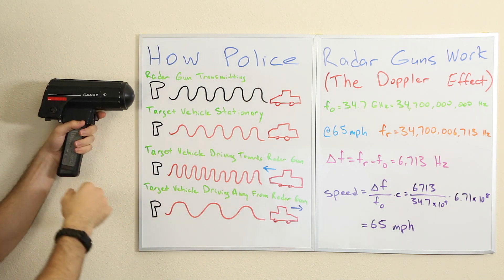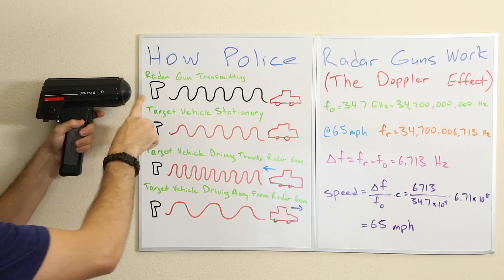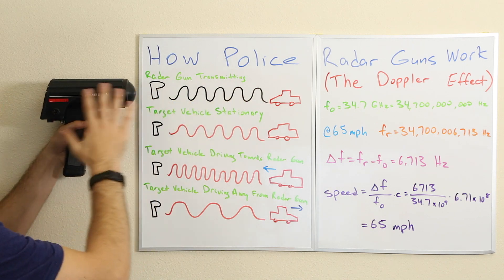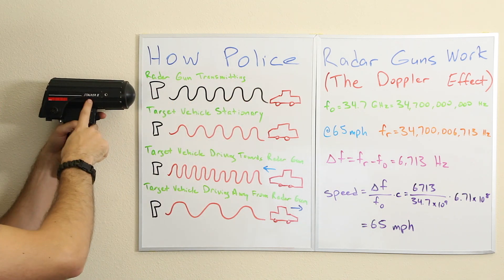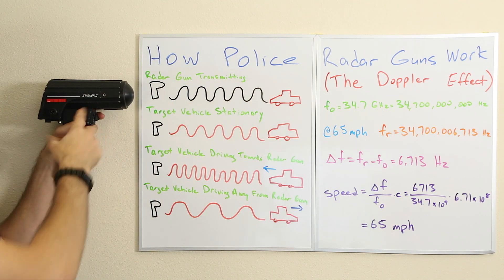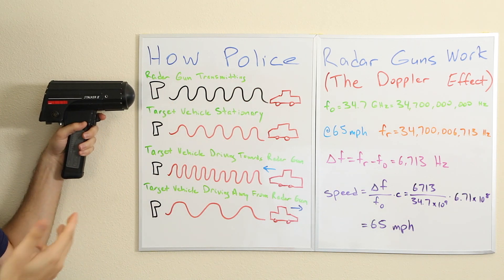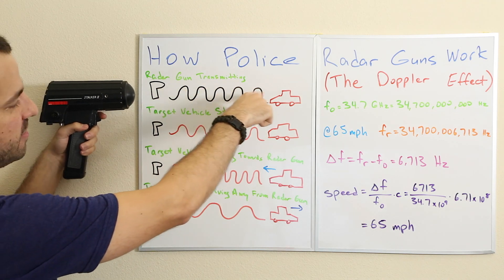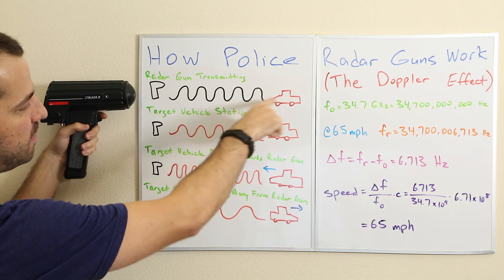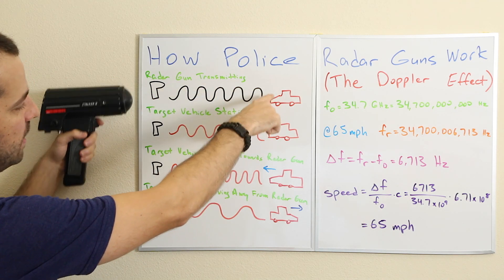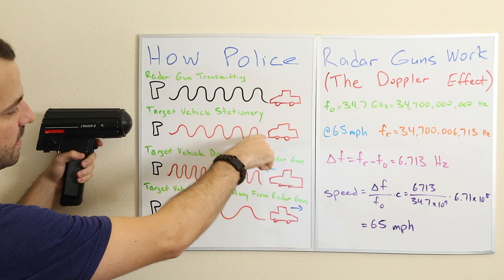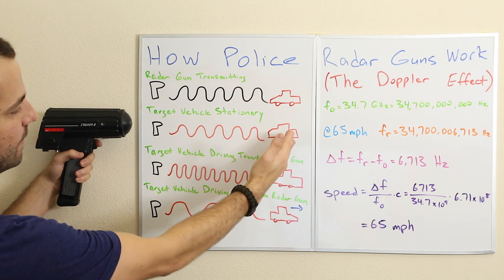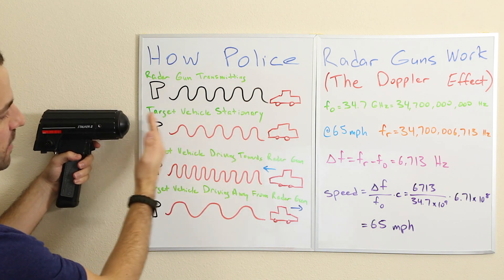The radar gun is going to be transmitting a signal. In this case, this is a Stalker gun, so it transmits at 34.7 GHz. That's going to be the frequency of the signal that's being transmitted. That signal is then going to hit a target vehicle and reflect back.